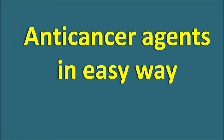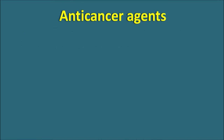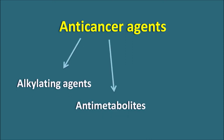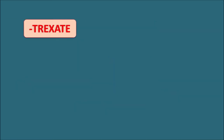Today we are going to discuss anti-cancer agents in an easy way. These agents include many types of drug categories such as alkylating agents, anti-metabolites, hormones and their analogs. Remembering the classification of anti-cancer agents is not an easy task, but we will see how to remember them easily using drug suffixes, infixes, and logical reasoning.